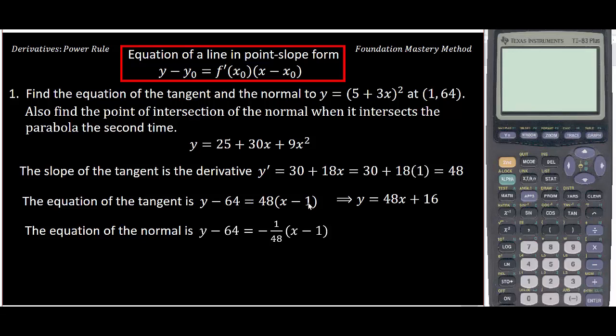The normal is the same as the tangent line, only the slope will be negative reciprocal. When you simplify this, we get -1/48x + 3073/48. You can write this as a decimal using your calculator.